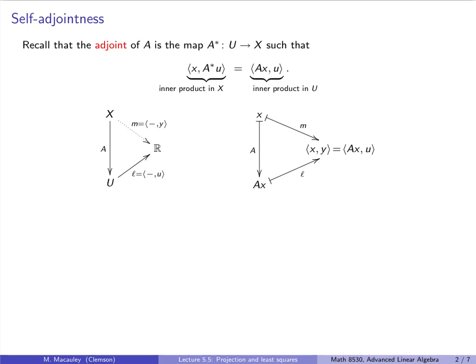So given the linear map A, before we have any inner product structure on X or U, we have a notion of the transpose map, which goes backwards between the dual spaces, sending a dual vector or linear function L to a dual vector in X, which is M. Now when we put an inner product structure on X, we get a natural identification with elements in the dual, namely that sends a vector Y to the linear functional that you get by just plugging Y into the second coordinate. This defines a natural map between elements in U and elements in X, and that is called the adjoint. The adjoint obviously depends on the inner product structure of X and U, whereas the transpose does not.